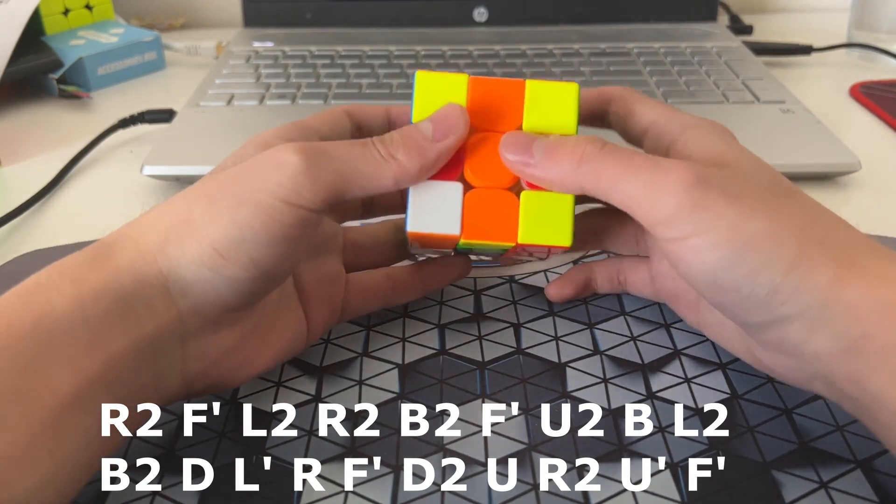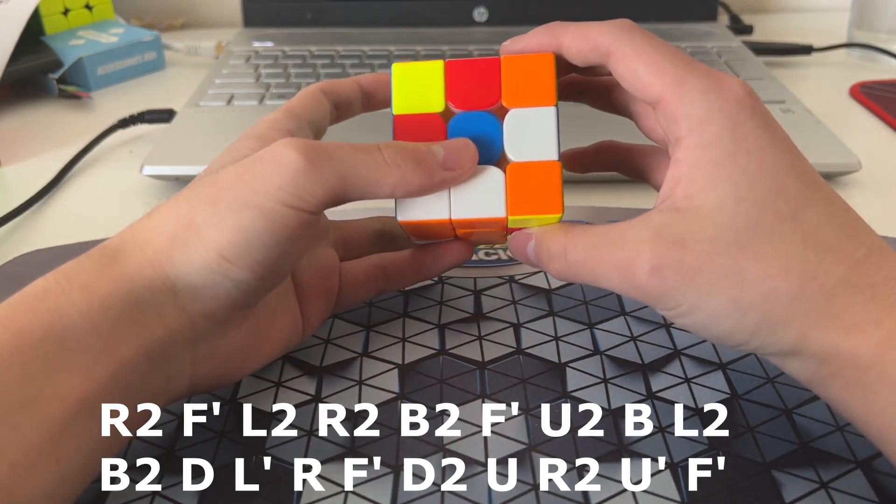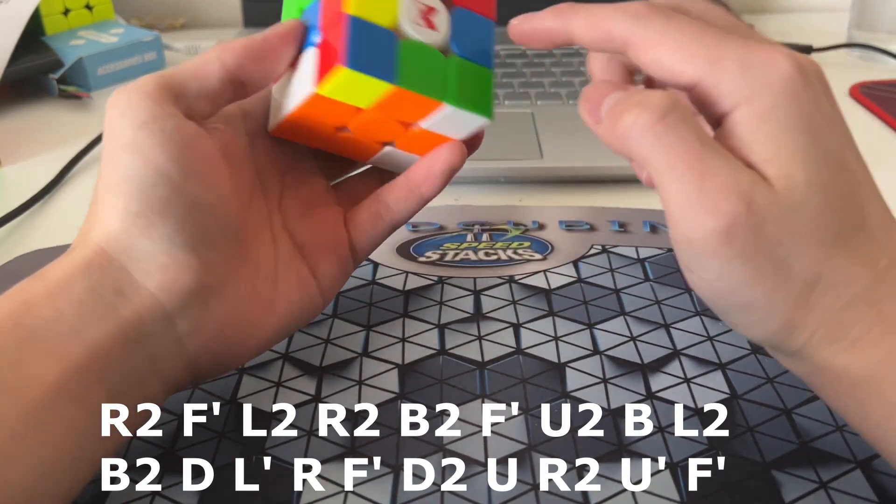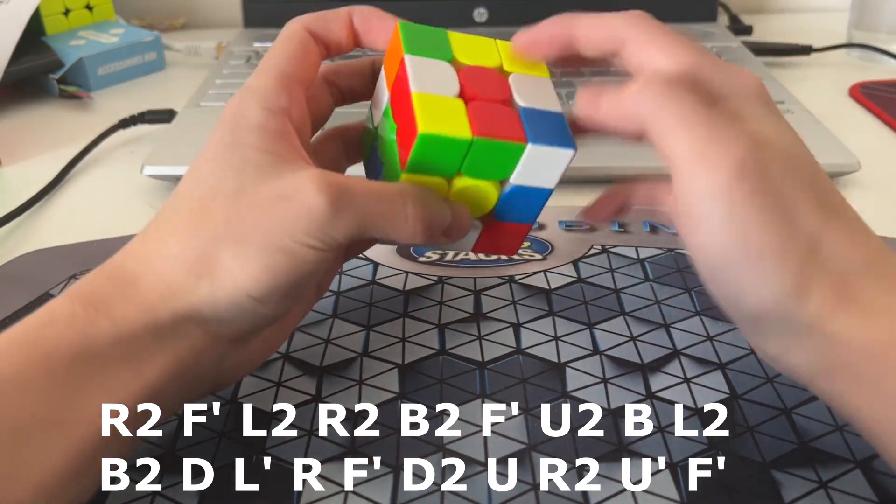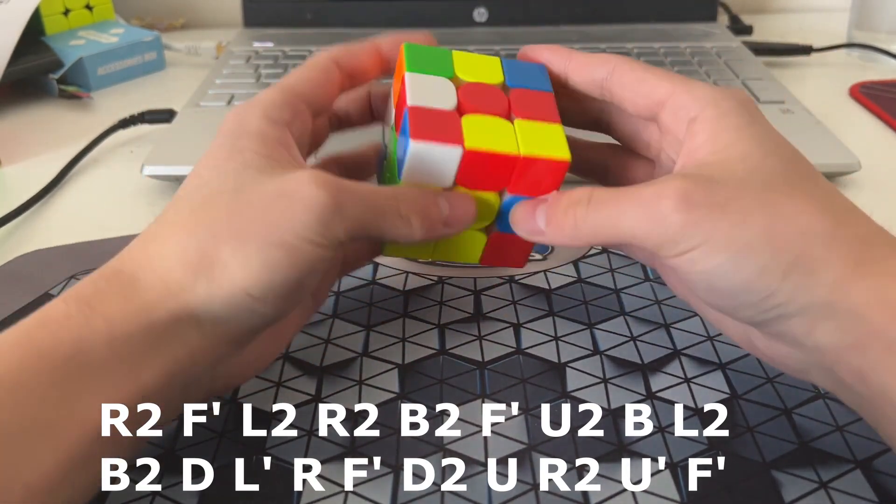So, B-prime, wide R-prime, R2. And then, basically treat this as a pseudo-pair, because I saw this edge was solved. Now insert it. And I have a double x-cross.